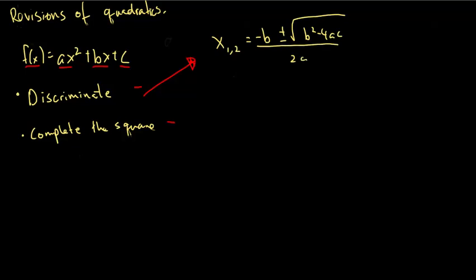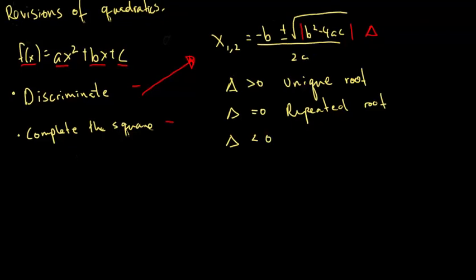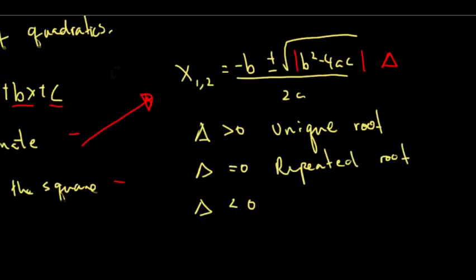This term inside the square root is called the delta, which is represented by a triangle. If delta is greater than 0, we would have a unique solution or unique root. If we have a delta that's equal to 0, then we will have a repeated root. And finally, if we have a delta that's less than 0, which means that b squared minus 4ac is negative, then we would have a complex root.